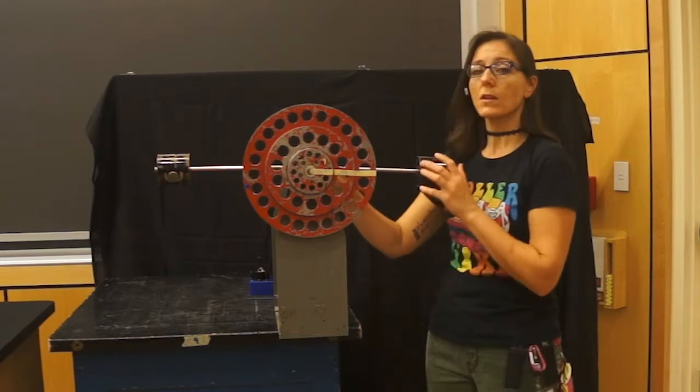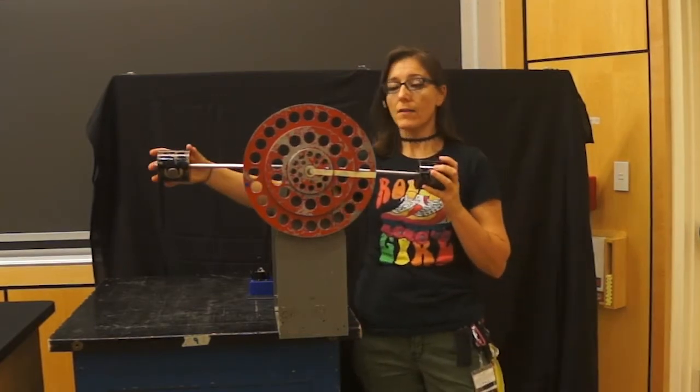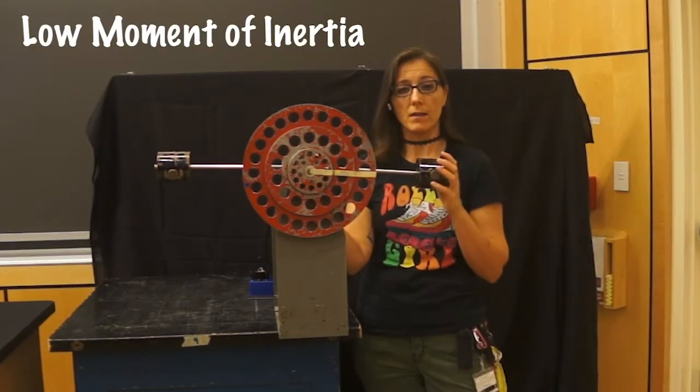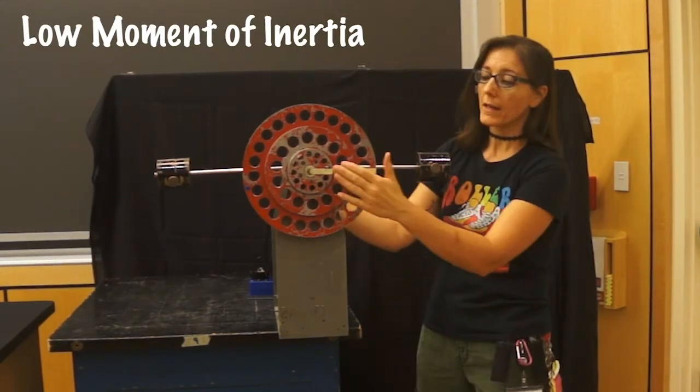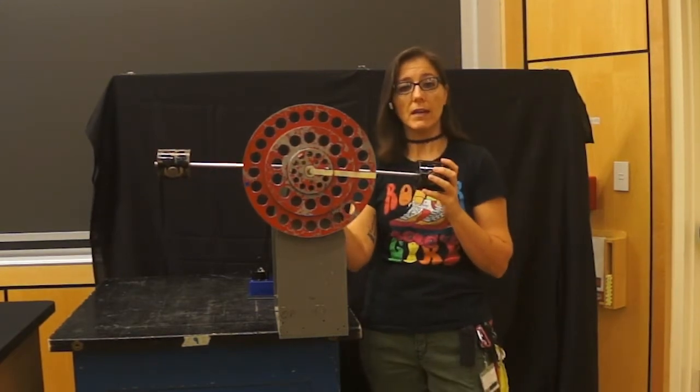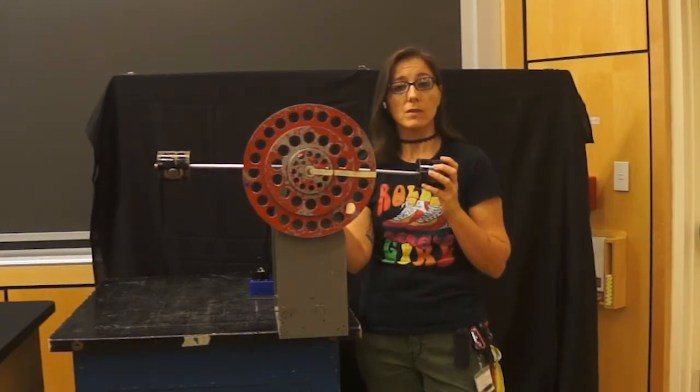The first thing we'll look at is having the masses close to the center of this rod, so you won't see them because they're behind the disc. We will look at what a hanging mass hanging at three different radii from the center will do to the system.